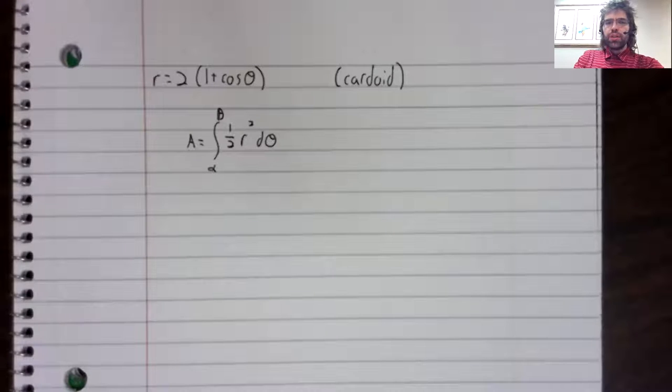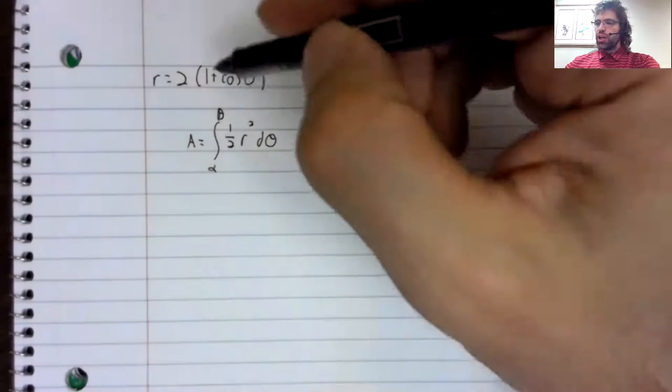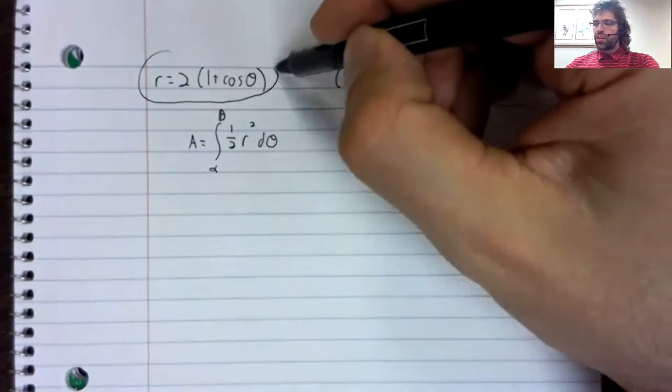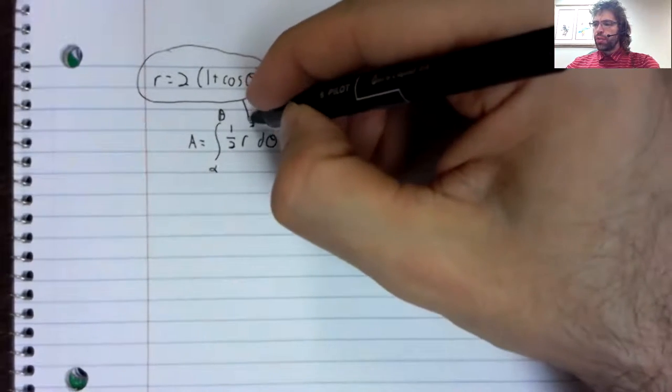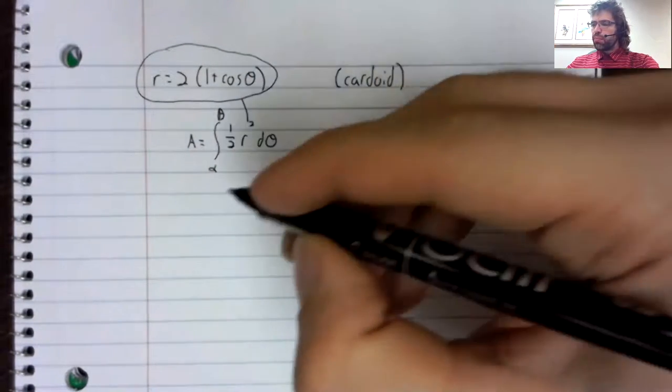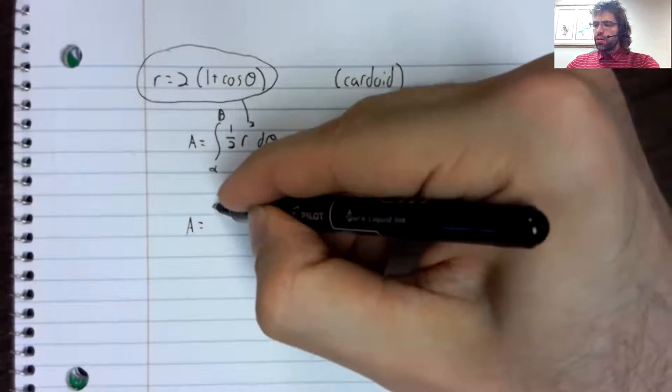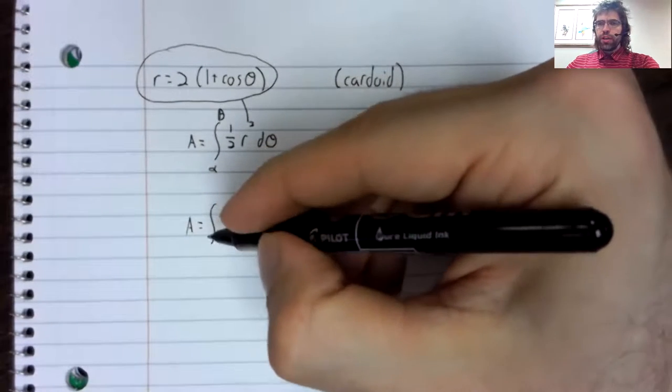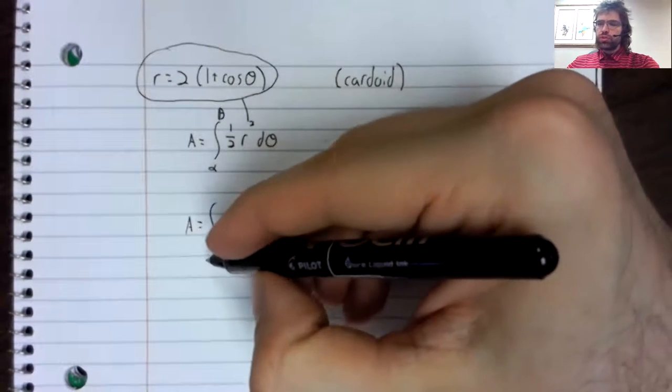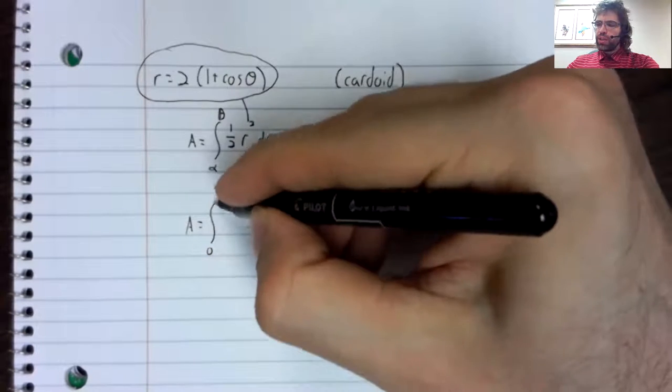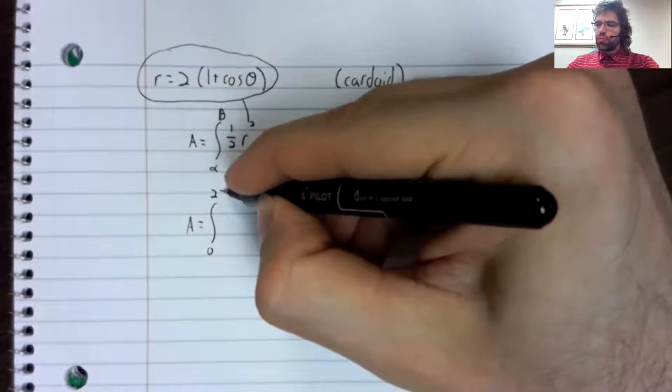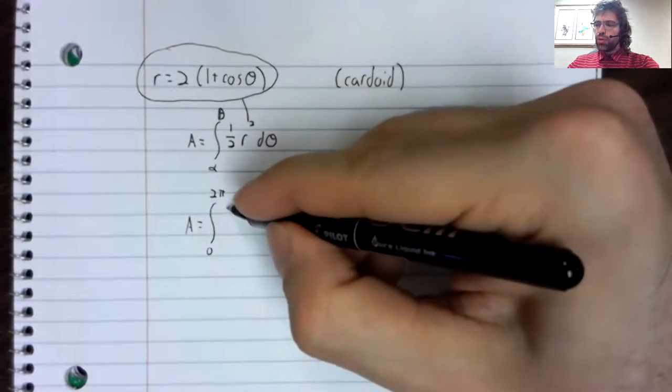Here is the general formula. If we plug this in for R, and we remember our trick that for the area of an enclosed region, we go from zero to two pi.